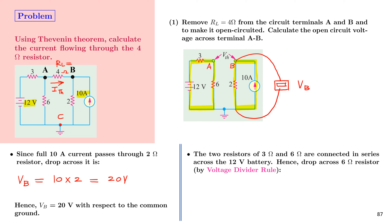In the first loop, the 3 ohm and 6 ohm resistors are connected across the 12V battery. Using the voltage divider rule, the voltage drop VA across the 6 ohm resistor equals 12 × 6/(6 + 3) = 8 volts.